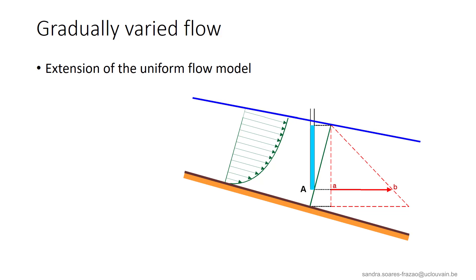The flow is said to be gradually varied because we will only consider progressive variations of the flow variables.